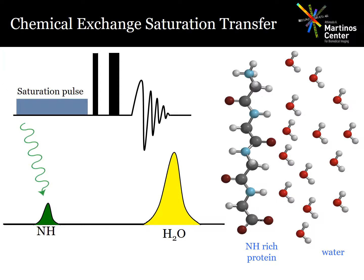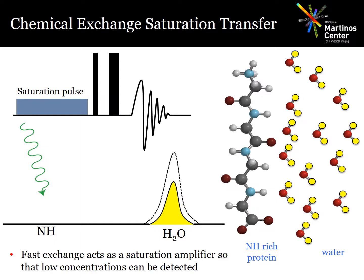In chemical exchange saturation transfer, CEST, an off-resonant saturation pulse can be used to saturate a group of labile or exchangeable protons. Those protons can then exchange with the water protons, and that leads to a measurable reduction in the water signal. In this way, fast chemical exchange can act as a saturation amplifier so that even low concentrations of a CEST agent can be detected.